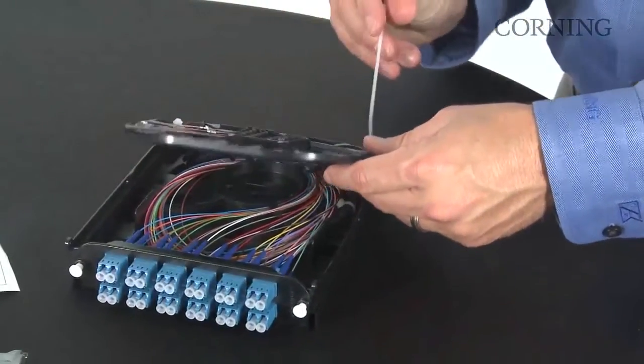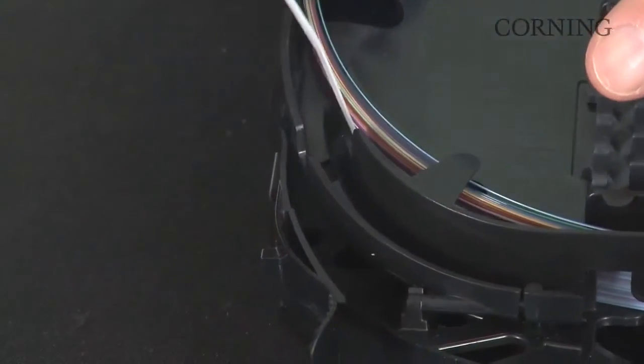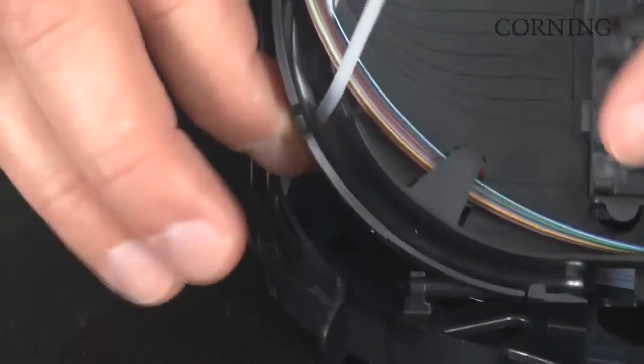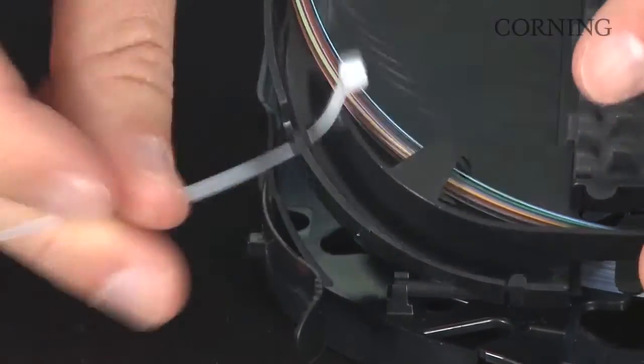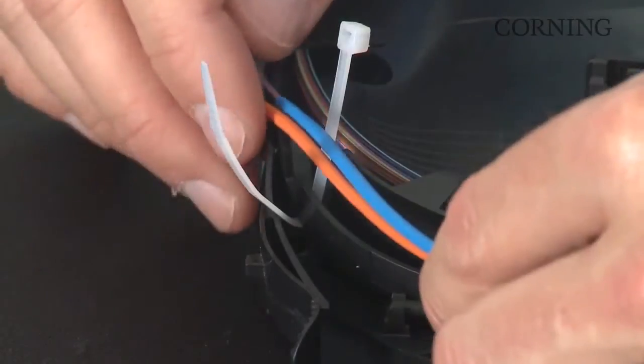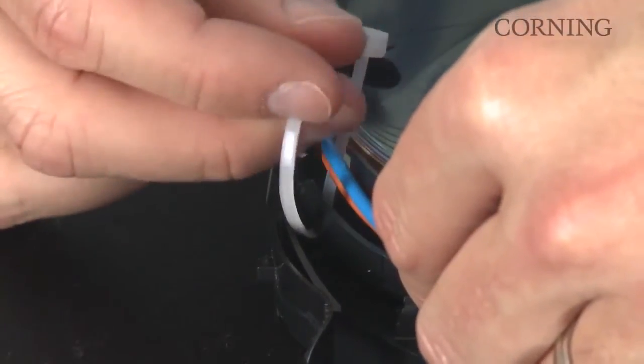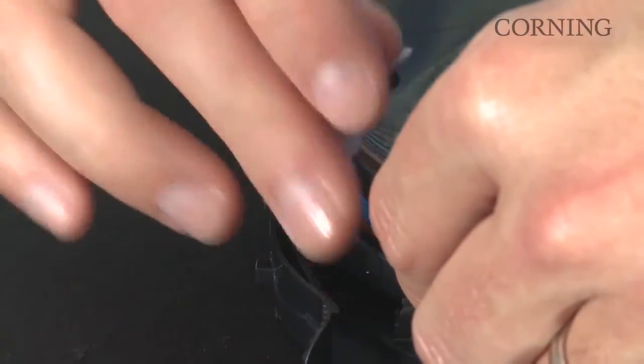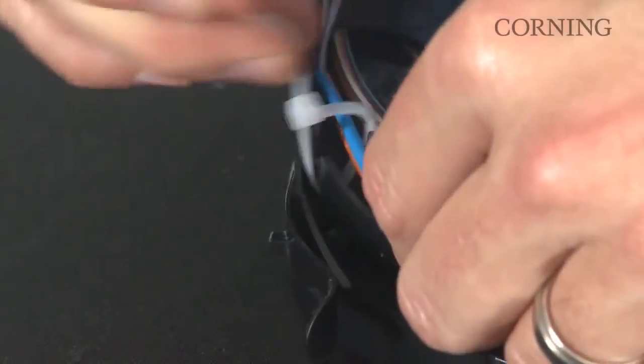Using a tie wrap, securely strain relief the end of the exposed tube or cable to the splice tray portion of the cassette. To avoid damaging the fiber inside the tube, use caution when securing the tie wraps.